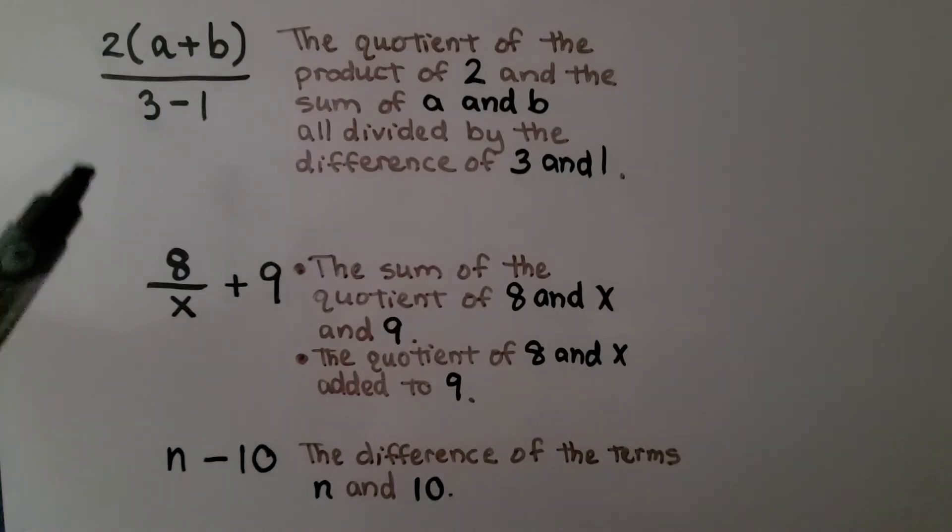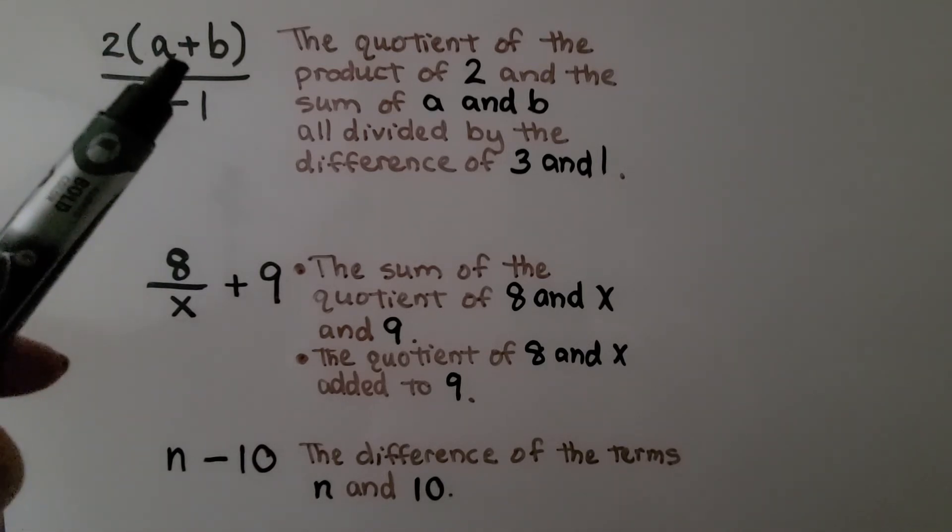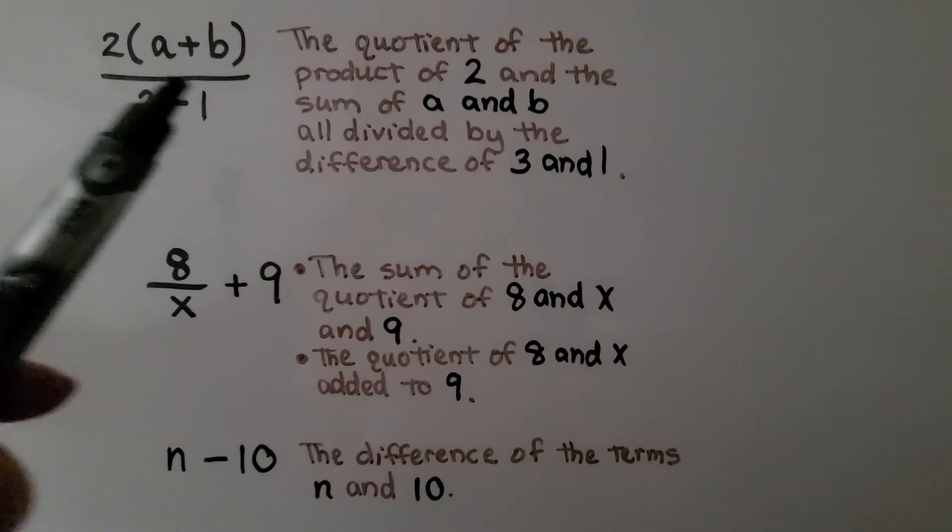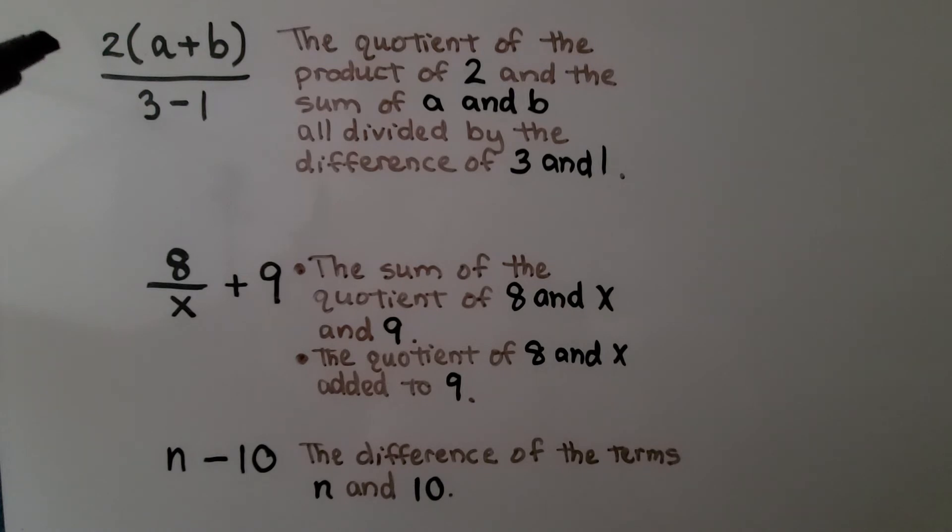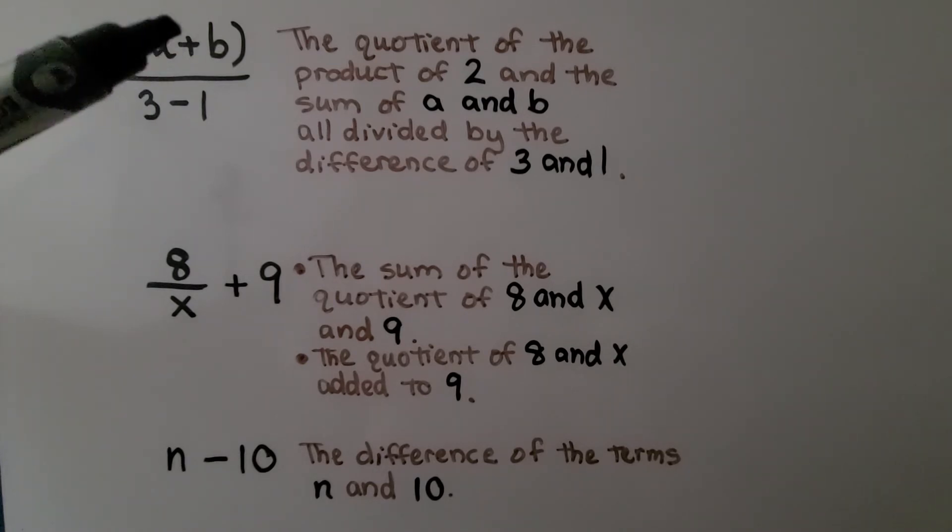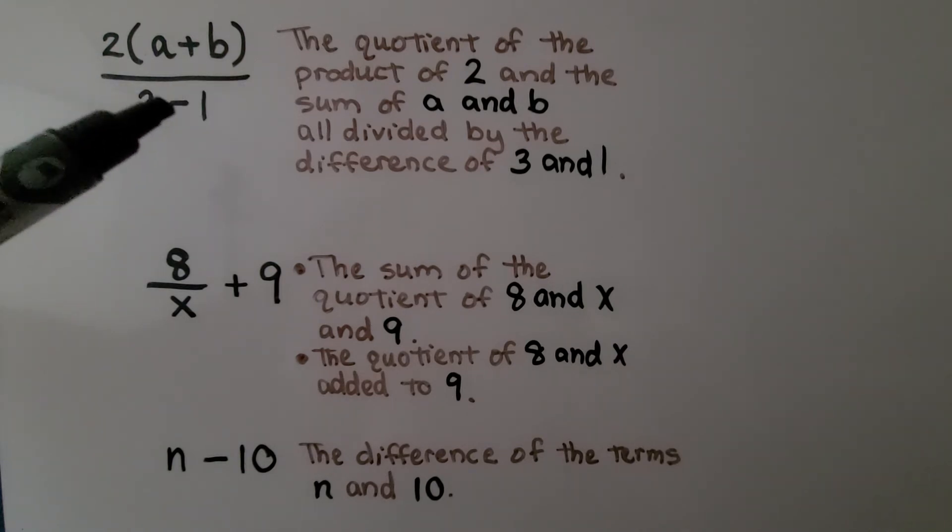For this one, we see the parentheses, so we know there's multiplication involved. We know there's addition involved. And we know, because of this fraction bar, that division is involved. And here we have subtraction. This can be described as the quotient, because of the division, the quotient of the product of 2 and the sum of a and b, all divided by the difference of 3 and 1.